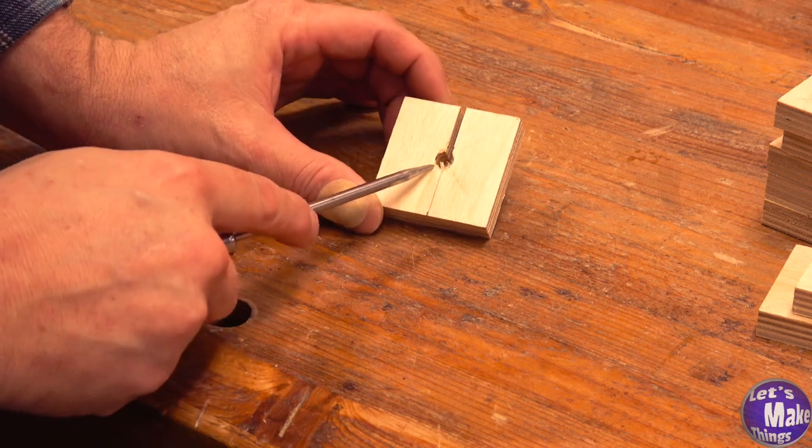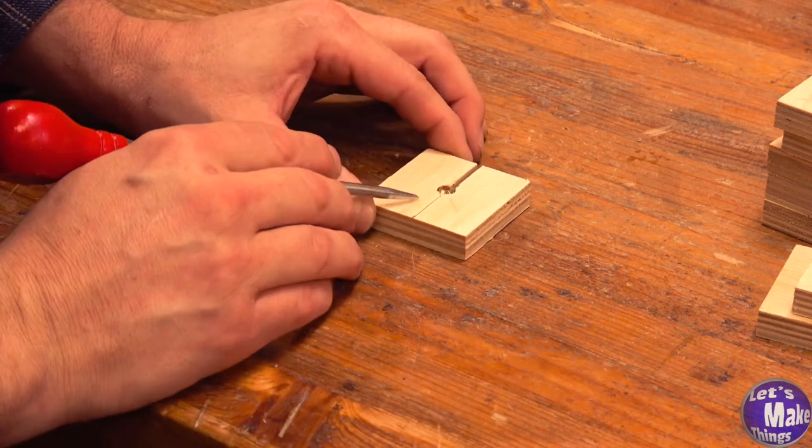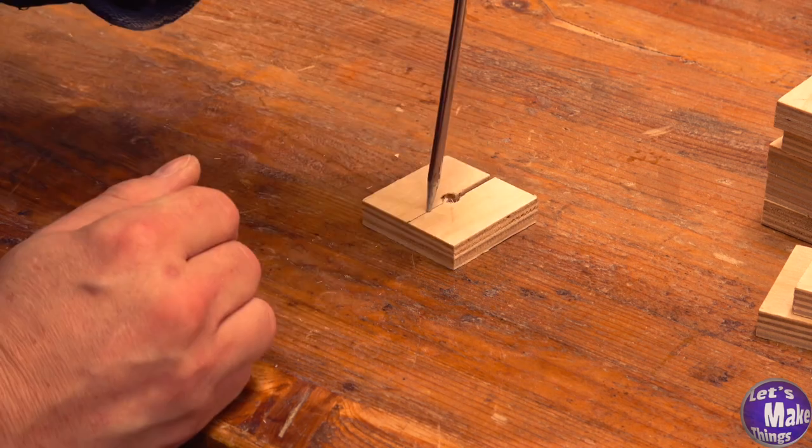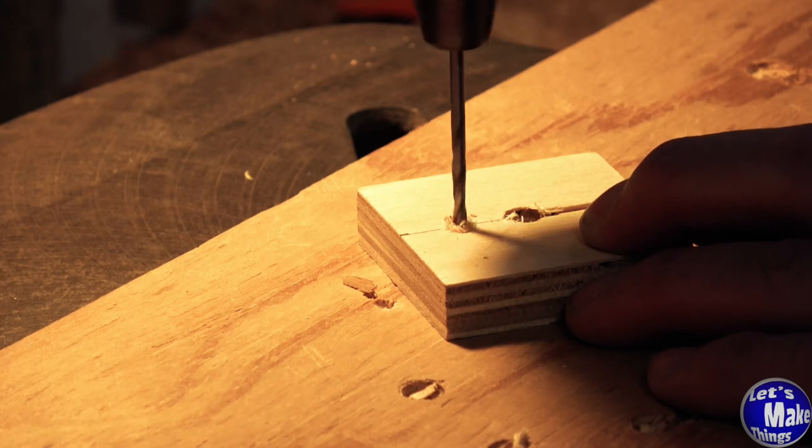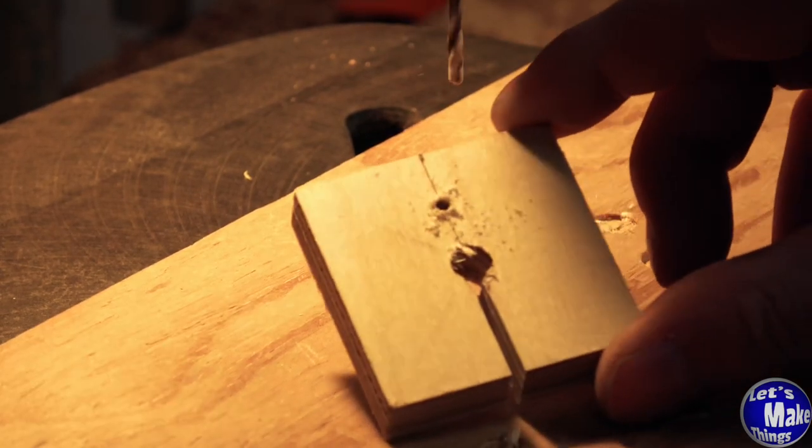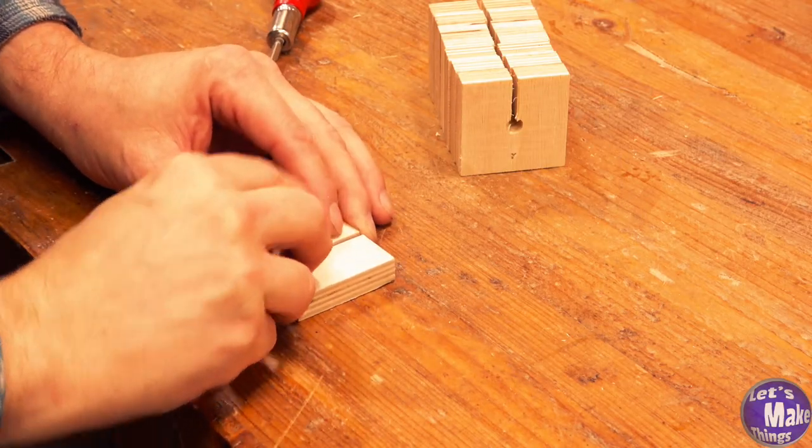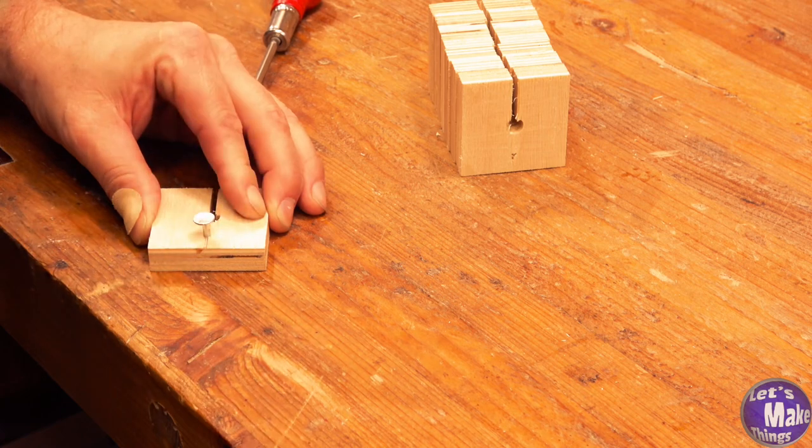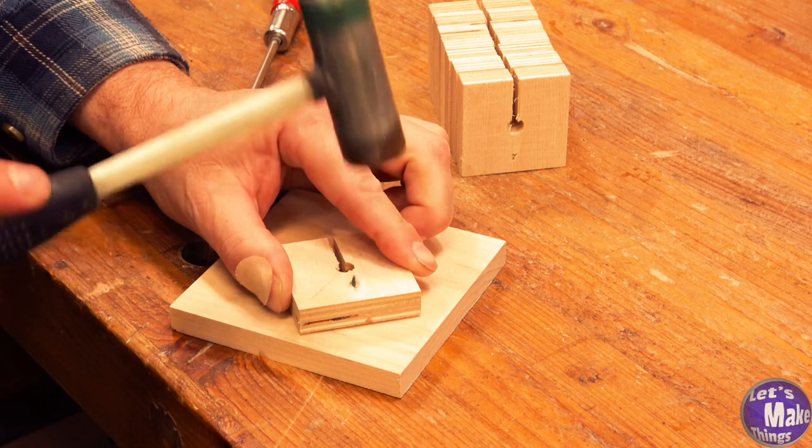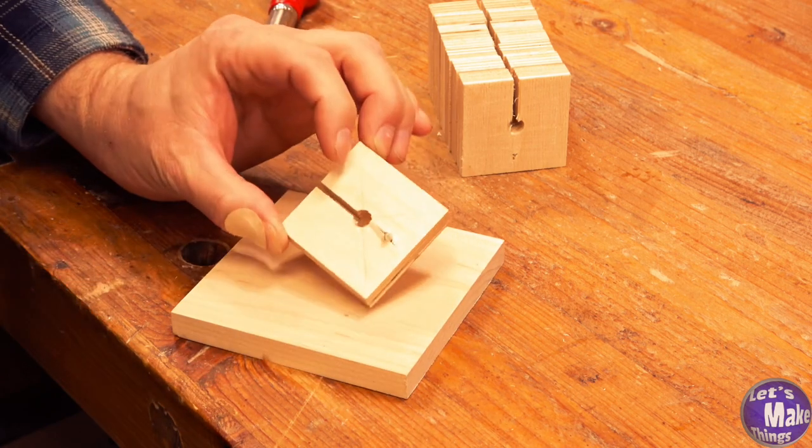After these are all cut out, we'll come over and we'll find the center in this block. We're just going to make a mark. It really doesn't need to be exactly centered, but just somewhere along this line. Then I'll drill this out with a drill bit that's slightly smaller than the nail that will go into it. Just like before, we'll add our nail through the hole. Again, tap the top. And there we go.